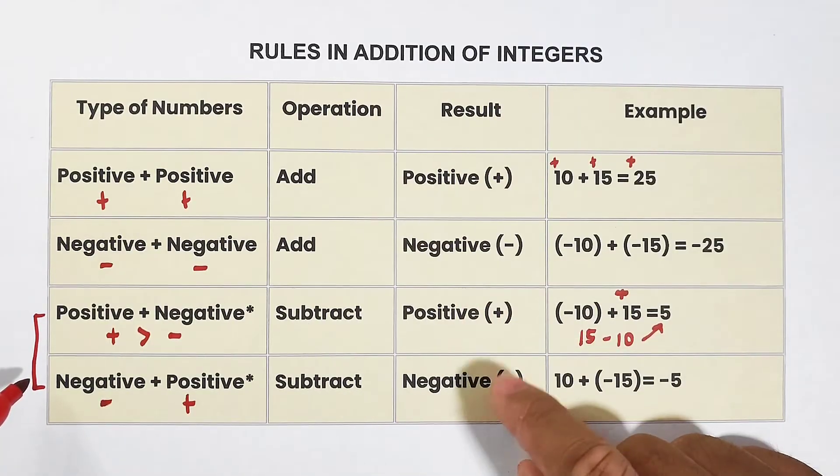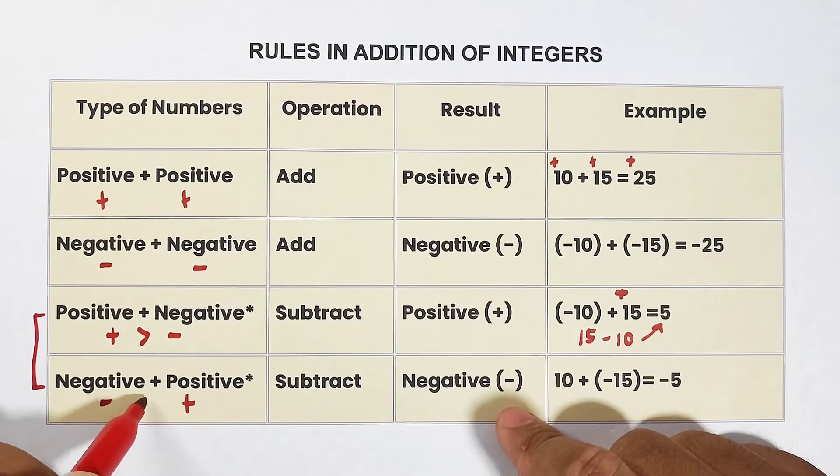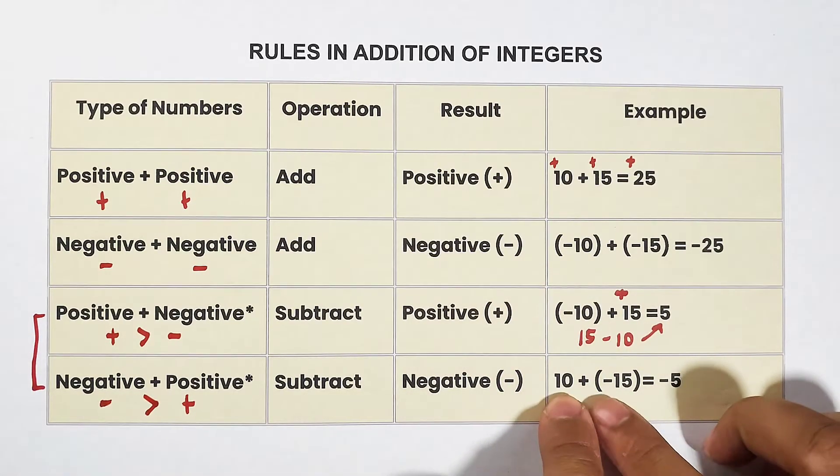Then for the result, it says negative. This one is negative if the absolute value of the negative number is greater than the absolute value of the positive number.